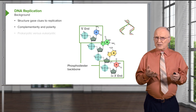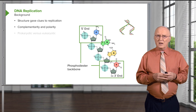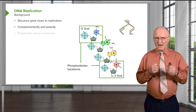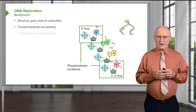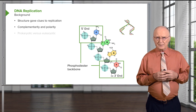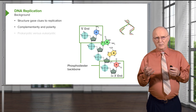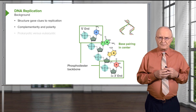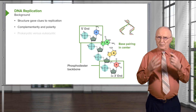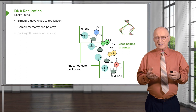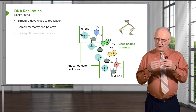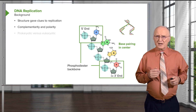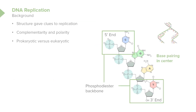There's a phosphodiester backbone that holds the individual bases together on one strand, as we can see. The bases project into the middle of what is the double helix, and the base pairing occurring in the center is stabilized by hydrogen bonds.